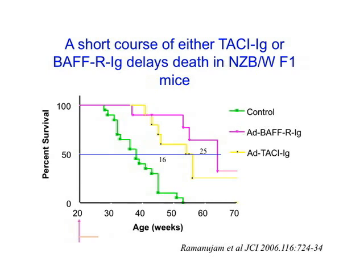This is data from my lab, though it's been shown by many groups, that if you use either the BAF-R:Ig fusion protein that blocks BAF alone, or the TACI-Ig fusion protein that blocks both BAF and APRIL, this markedly prolongs survival of mice. In this experiment, we treated the mice for about six weeks starting at about four and a half months of age, and this resulted in prolonged survival of the animals, with some animals surviving out to two years.